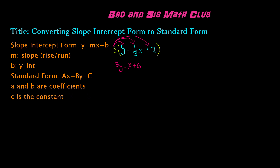The next step is to look at standard form, which is ax plus by equals c. You can see that the x and y values are on the left-hand side, whereas in y equals mx plus b, the x is on the right-hand side. So we need to move the x onto the left-hand side, and we can do that by subtracting x from both sides. When we do this, x cancels out from the right-hand side, and we get negative x plus three y on the left, which equals six on the right.